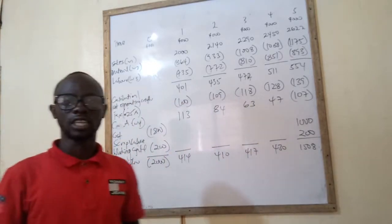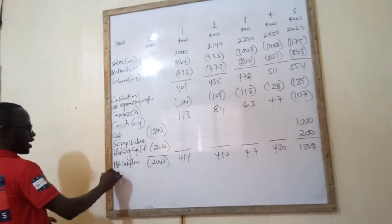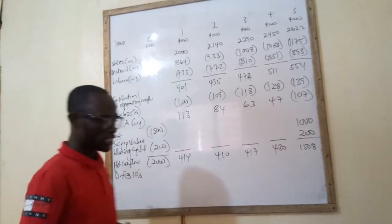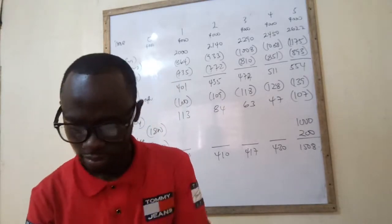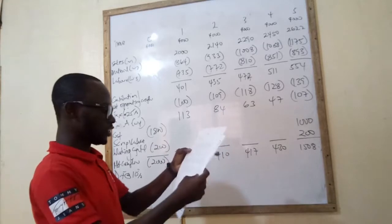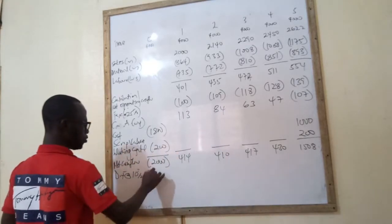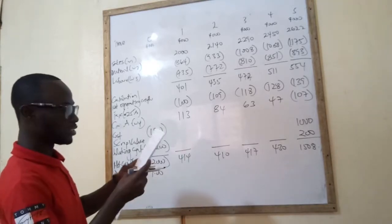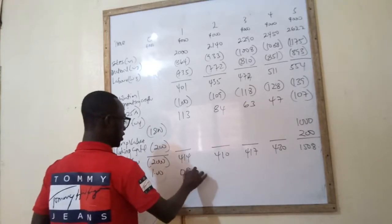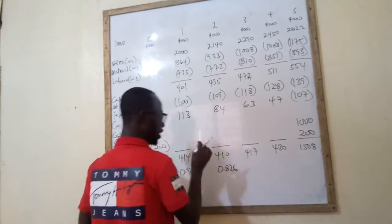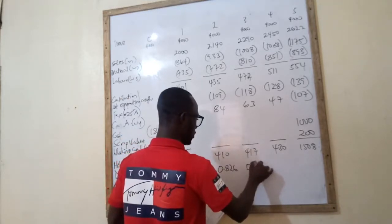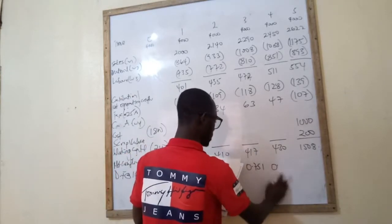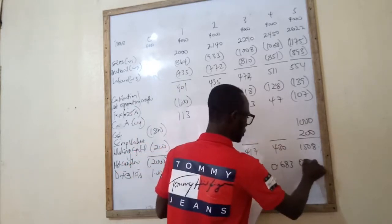Now that we have the net cash flows, we bring the discount factor at 10%. We go to the present value table at 10%: year zero is always 1; year one is 0.909; year two is 0.826; year three is 0.751; year four is 0.683; year five is 0.621.